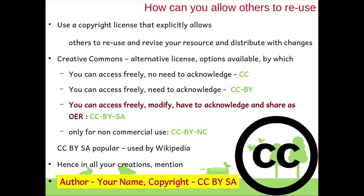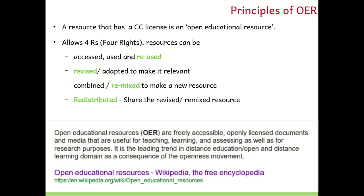The CC BY SA clause is also used by Wikipedia and is one of the most popular Creative Commons licenses. Whenever you create a resource — whether it's a video, audio podcast, web page, text document, animation, or a GeoGebra file — you need to mention in the file the author name (which is you), and alongside or below that, mention 'Copyright – CC BY SA.' As shown on the slide, say: author, your name, copyright – CC BY SA.